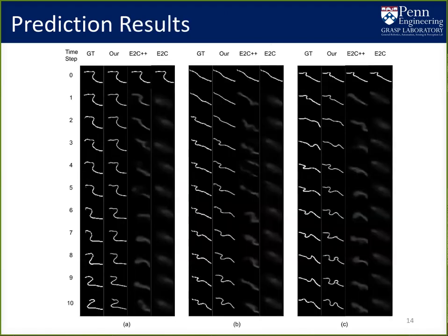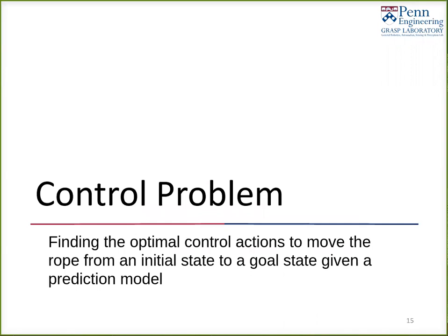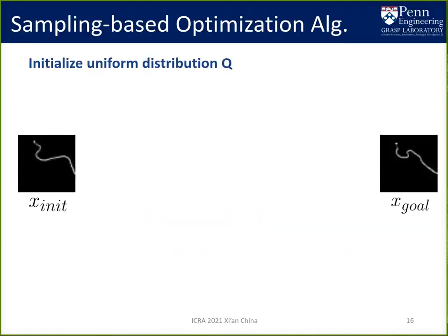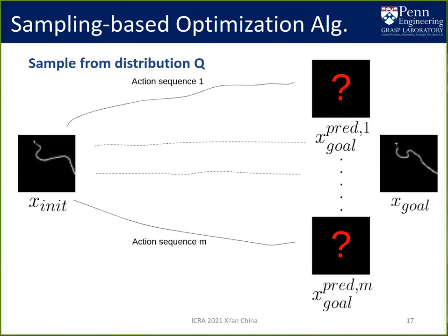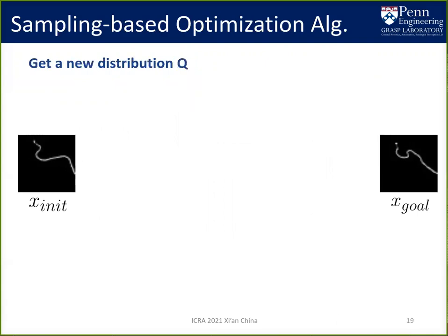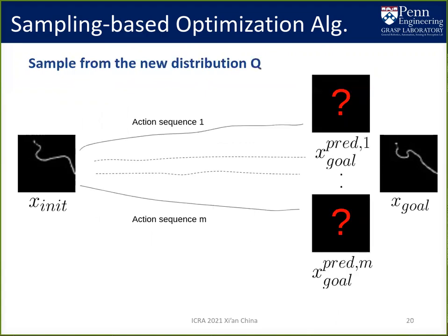Here are the results. We compare with the ground truth baselines e-to-c and e-to-c plus plus. For the control problem, we visualize how our sampling-based optimization algorithm works, given states, prediction model, and a uniform distribution Q. We first sample M action sequences from this initial distribution, then calculate and sort the loss between the predicted images and the goal image. We select N action sequences with the lowest loss, get the mean and covariance of these action sequences, and fit a multivariate normal distribution to obtain a new distribution Q. We then sample from this new distribution Q and iterate the same process again until the new distribution Q converges.